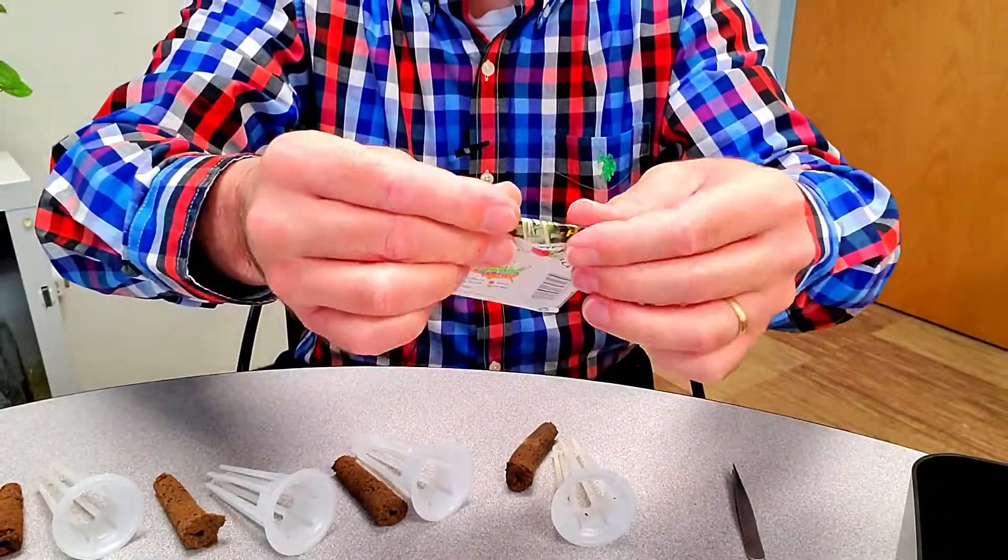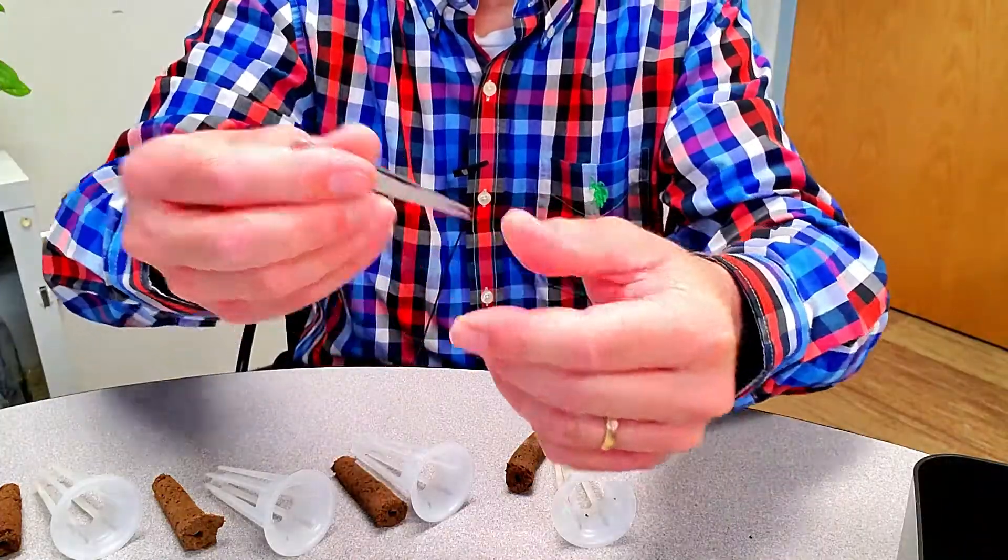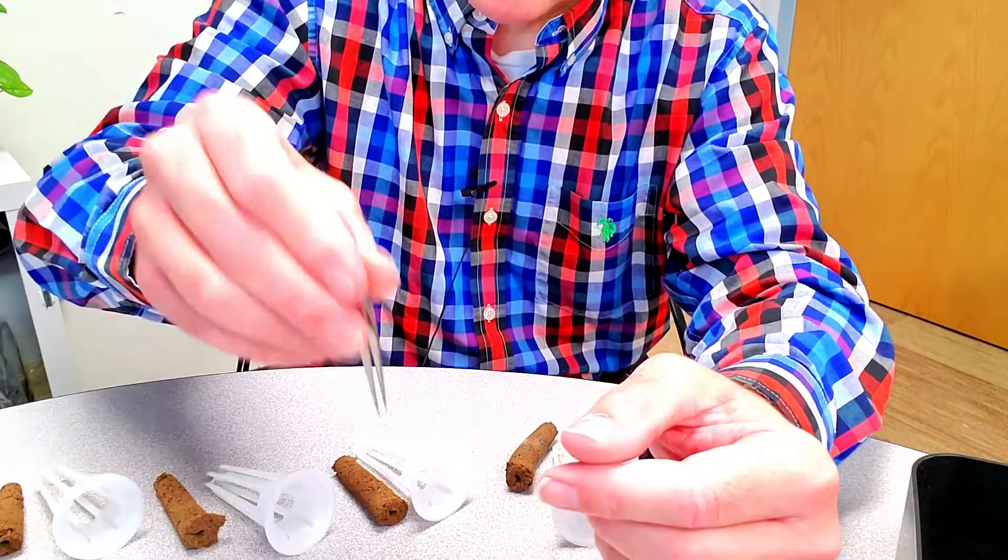One of the tips I'll give you, besides folding over your seed package so the seeds don't all run out, is to get a pair of tweezers. Very nice for picking up small seeds.